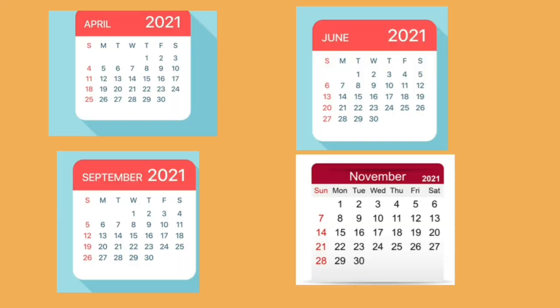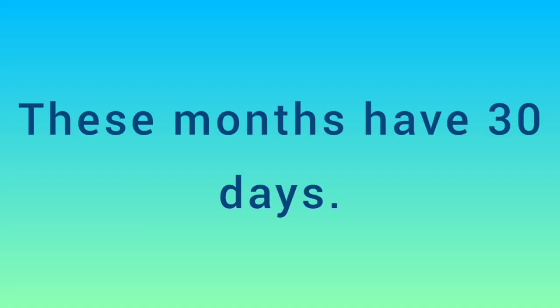April, June, September, and November — these months have 30 days.